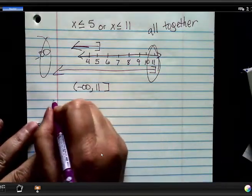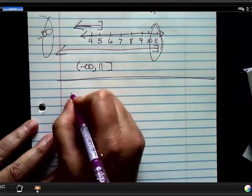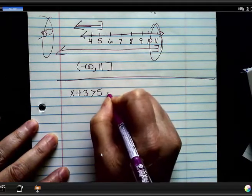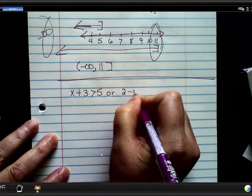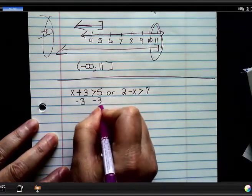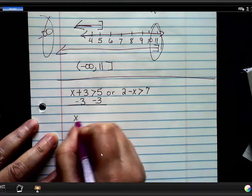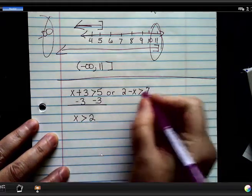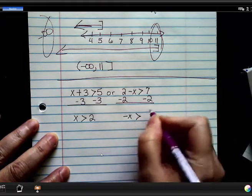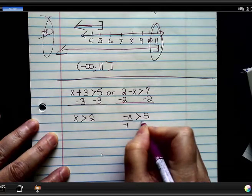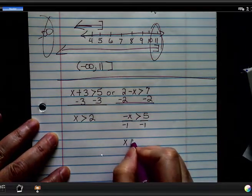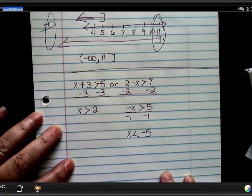All right, let's try one of those with a multi-step inequality. So I'm going to subtract 3 here. X is greater than 2. I'm going to subtract 2 here. Negative x is greater than 5. I have to divide by negative 1 because I don't want a negative. And I flip my inequality. So x is less than negative 5.